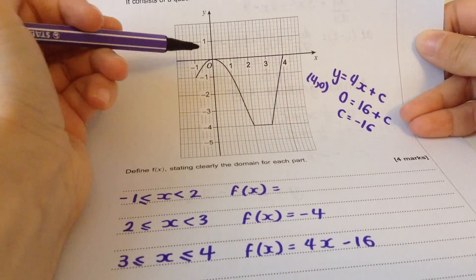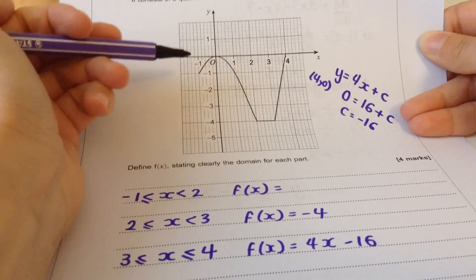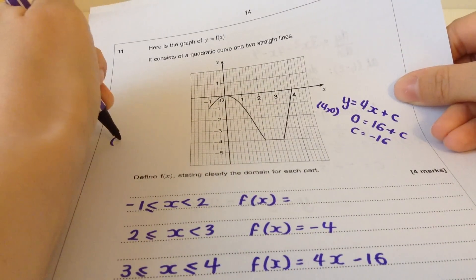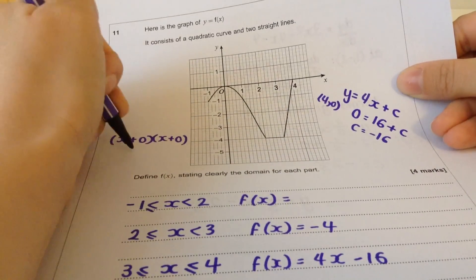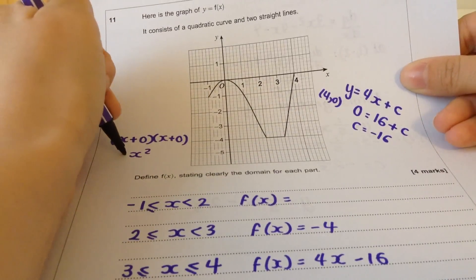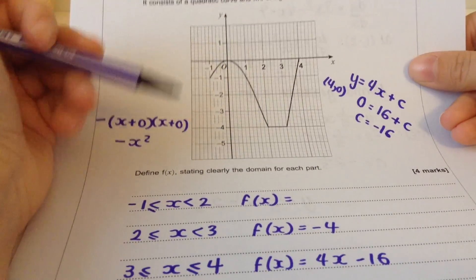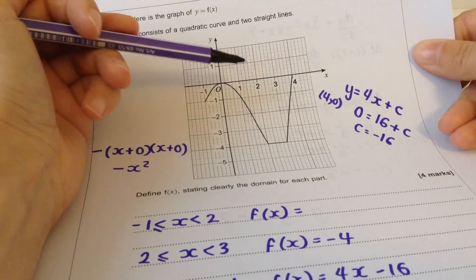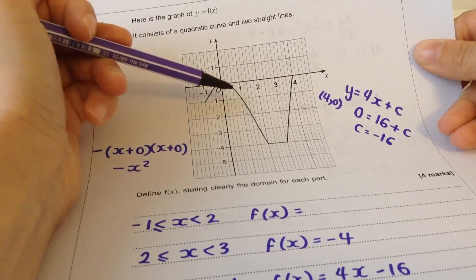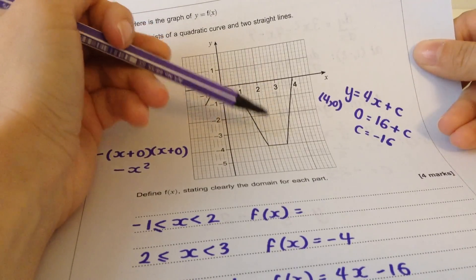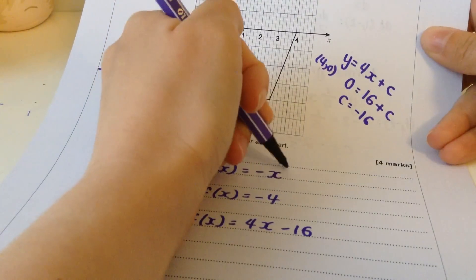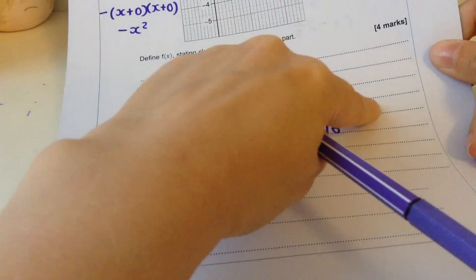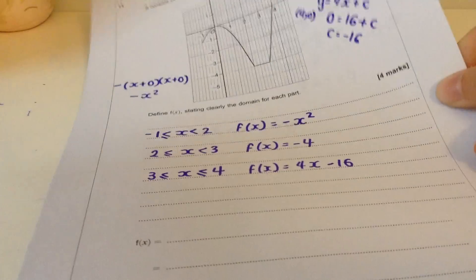Let me just do some working out over here. Y equals four x plus c. If I put four zero into that, zero equals sixteen plus c, so c is negative sixteen. Then the quadratic part. I can see it's a negative quadratic, and it goes through zero zero, which means the only root of it is zero. So it's going to be like x plus zero, x plus zero, in other words just x squared. But it's negative, so it's going to be negative x squared. It might have been stretched as well. To check that, one squared is one, and then negative would be minus one, so that fits. And two squared should be four, so minus four, it does fit. So this is just minus x squared.